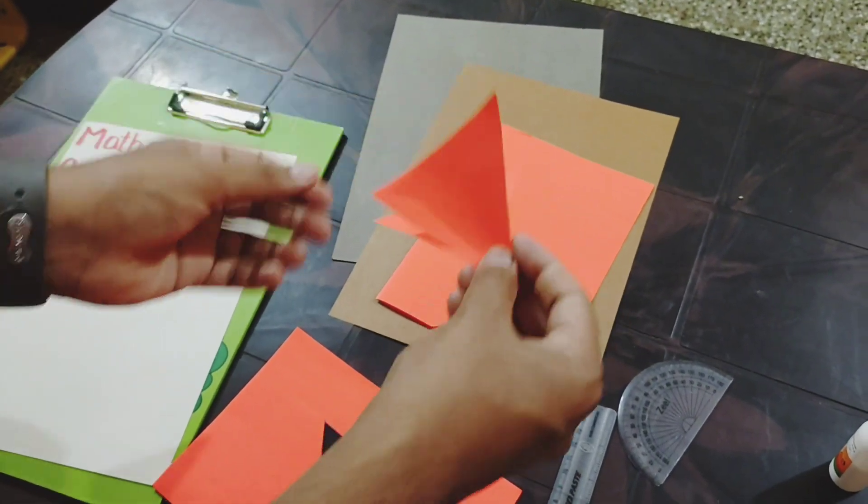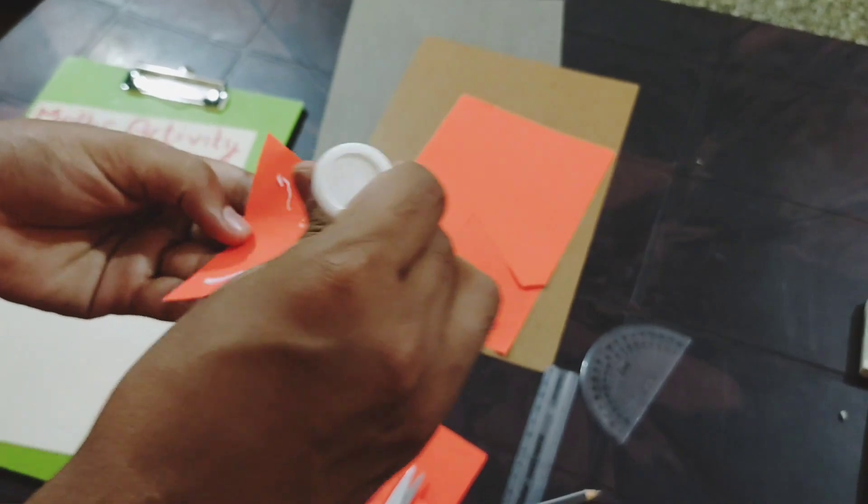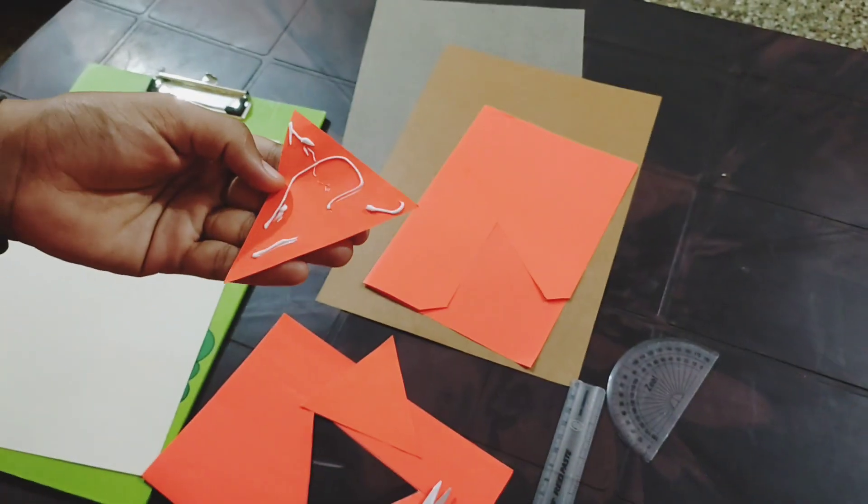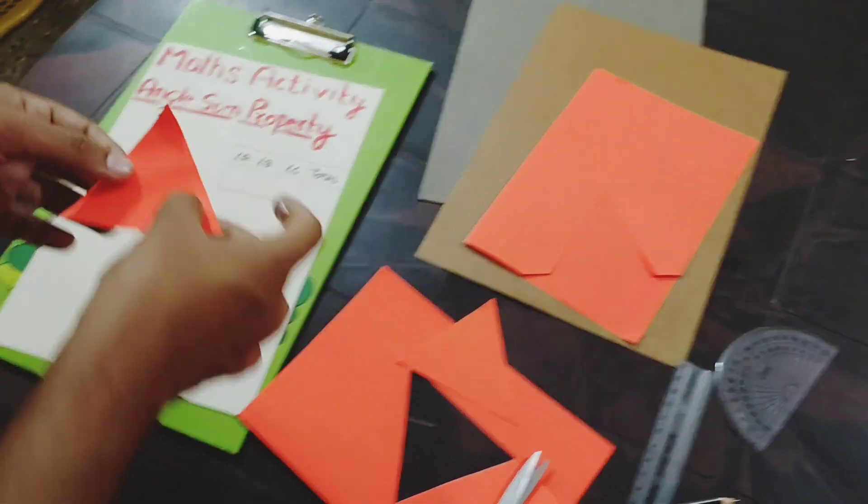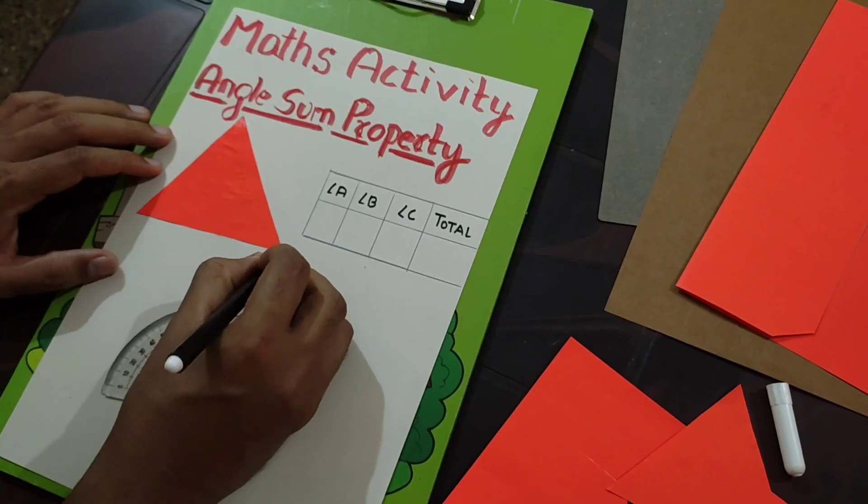Now I will take one triangle and quickly put gum to it. I will stick it into our paper. I'm putting gum - any glue works - and you can stick here on this paper.